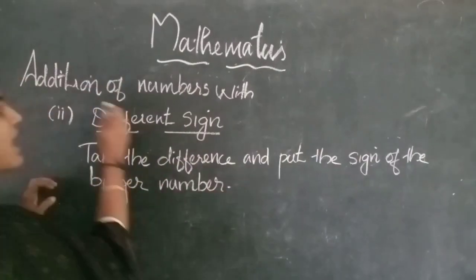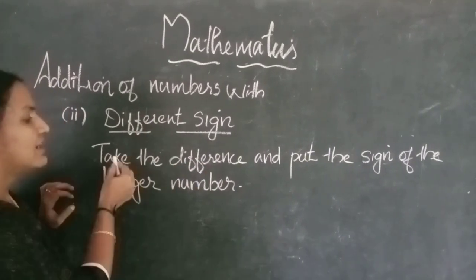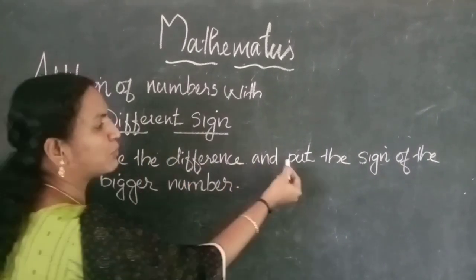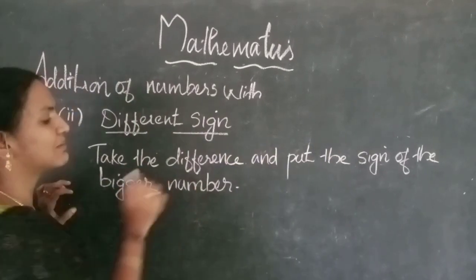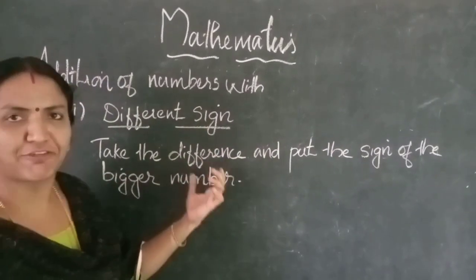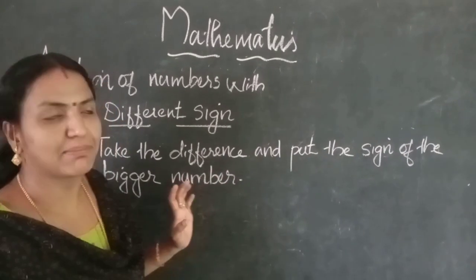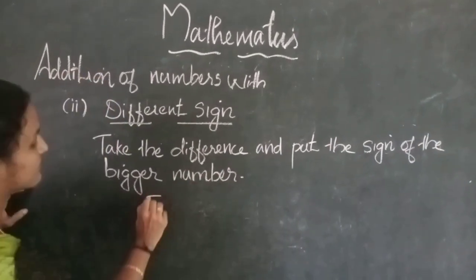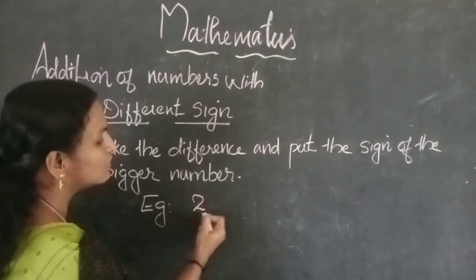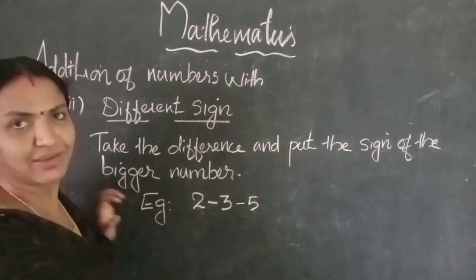Next, addition of numbers with a different sign. The rule is: take the difference and put the sign of the bigger number. First take the difference, then put the sign of the bigger number. For example: 2 minus 3 minus 5.